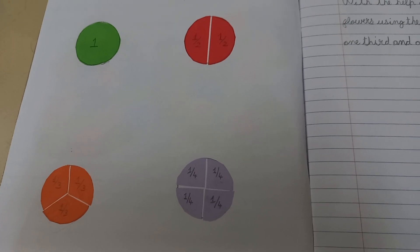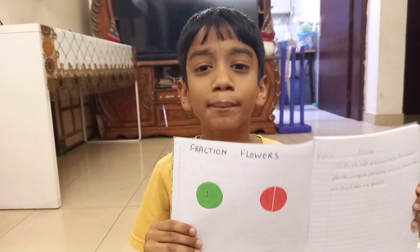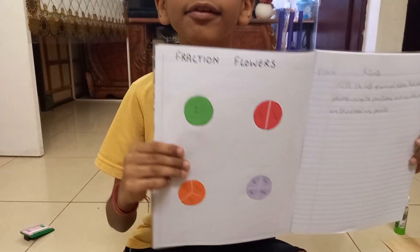These are the circles divided into the fractions. Let's make the petals for these circles and we will color them.